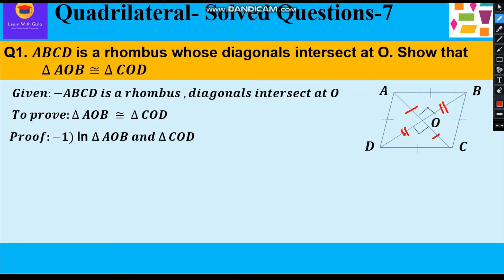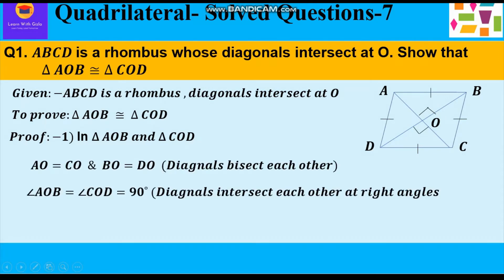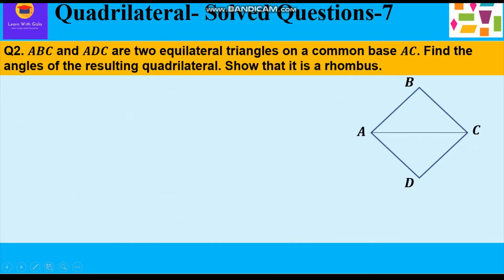Therefore AO = CO and BO = DO. And further, angle AOB is equal to angle COD, equal to 90 degrees, as diagonals intersect each other at right angles. They form 90 degrees each and are also vertically opposite angles, so they are each 90 degrees. Therefore triangle AOB is congruent to triangle COD by SAS congruency — that is, side-angle-side congruency.